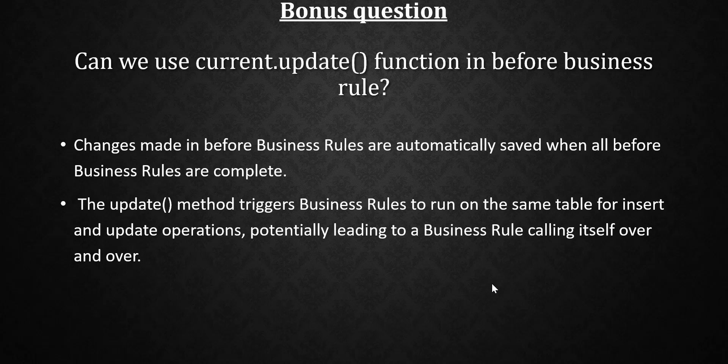The next question is: can we use current.update() in a before business rule? Changes made in a before business rule are automatically saved when all before business rules are complete. The update() method triggers business rules to run again on the same table, potentially causing the business rule to call itself over and over, leading to an infinite loop. So it is not a good practice to use current.update() in a before business rule.